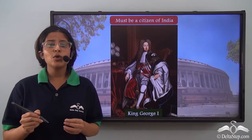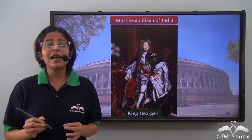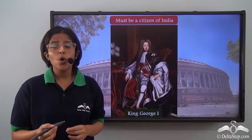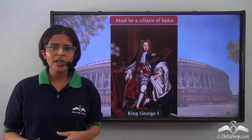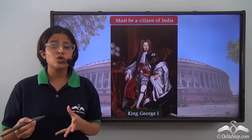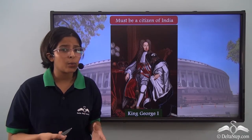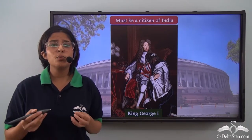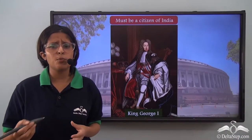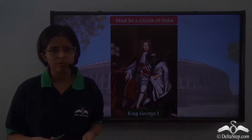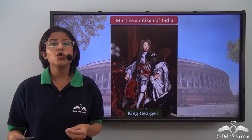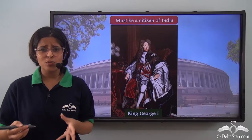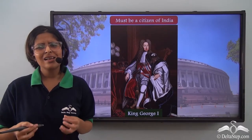The first criteria to contest for a Lok Sabha election is that you have to be a citizen of India. King George I was the ruler of Britain who was born and brought up in present day Germany. He did not know the English culture nor the English language. He was so alienated from the people of England that it became very difficult for him to become the ruler. Certainly, a leader must know the country they govern.